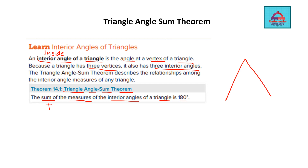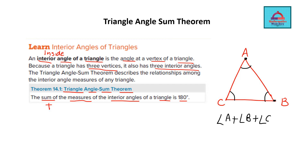For example, in triangle ABC, there are three vertices and accordingly three angles: interior angle A, interior angle B, and interior angle C — all at the respective vertices and inside the triangle. When you add all three angles, the sum is 180 degrees. This is your triangle angle sum theorem. Now let's use it to solve problems.